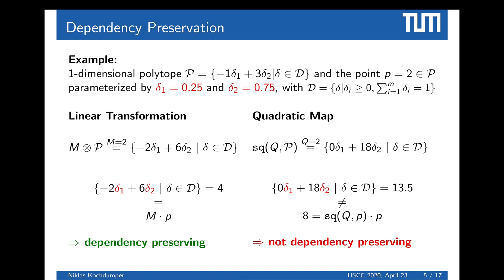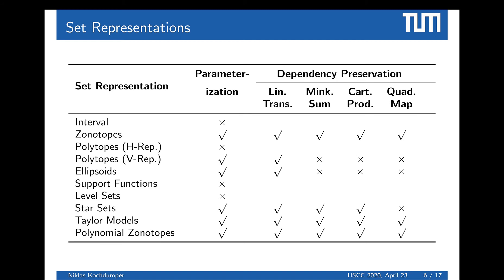This table shows an overview of which set representations are parametrized and which set operations on them are dependency preserving. Parametrized set representations include zonotopes (with factors alpha), polytopes, ellipsoids, star sets, Taylor models, and polynomial zonotopes. The set operations used in our paper are linear transformations, Minkowski sum, Cartesian product, and the quadratic map. For these operations, zonotopes, Taylor models, and polynomial zonotopes are all dependency preserving and are therefore candidate set representations for our reachability algorithms.